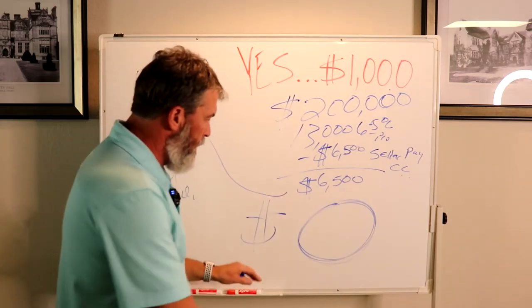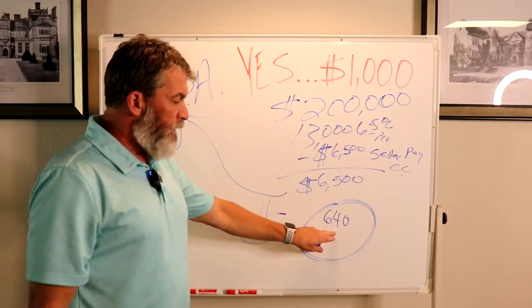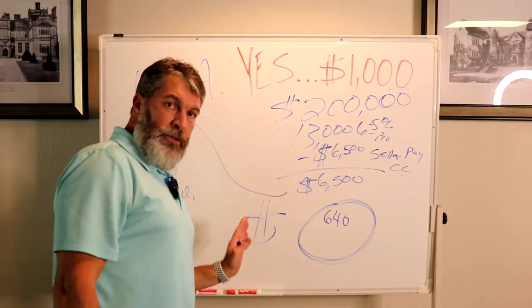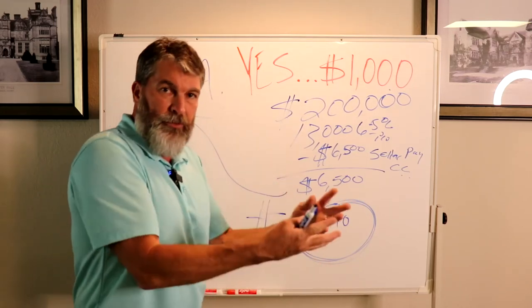You got to have a 640 credit score. So your credit score has to be 640. And if it's not that, then you need to get with a good lender.